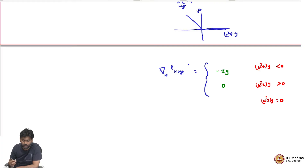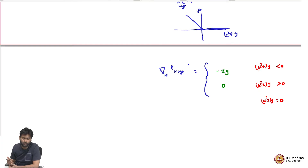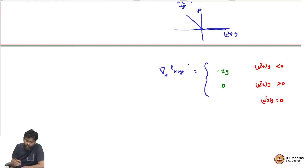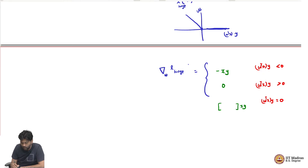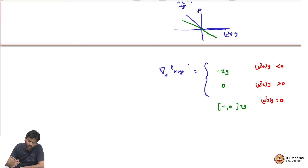This is a modified version of hinge. We have to look at sub-gradients at this point, and sub-gradients at this point can be any value between the slopes of the two pieces - these two slopes can be from minus 1 to 0. I can pick any value between minus 1 to 0. For example, this is a sub-gradient, this is a sub-gradient at this point. A sub-gradient is a line that is completely below this function at that point.